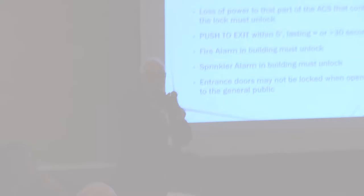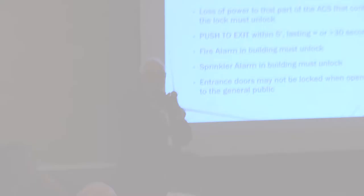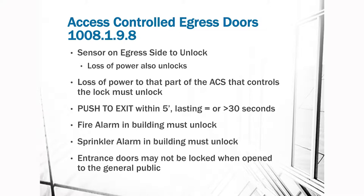Push to exit within five feet of the door — and it must last at least 30 seconds, though it can last longer. Fire alarm in the building, sprinkler in the building must unlock entrance doors. The door may not be locked when open to the general public — the entrance door to the building or an entrance door to a suite.